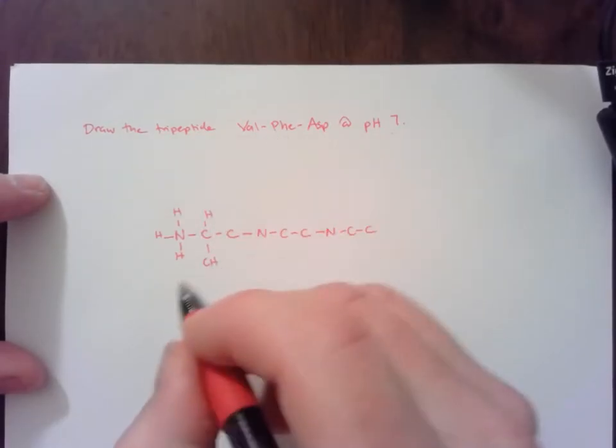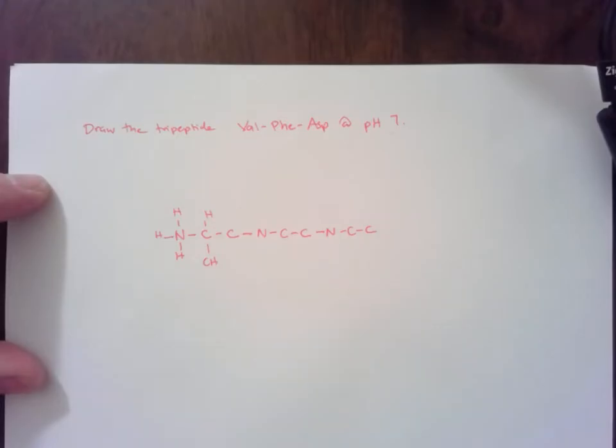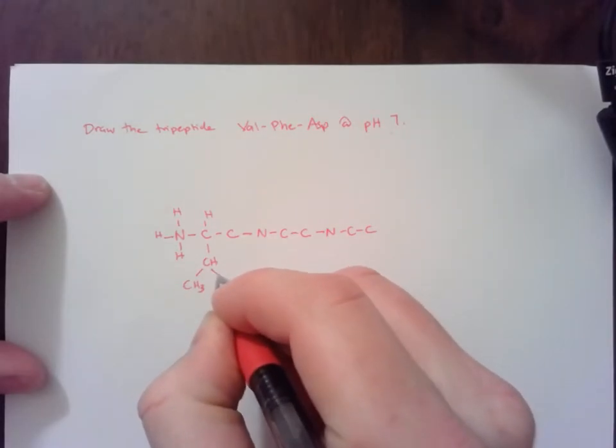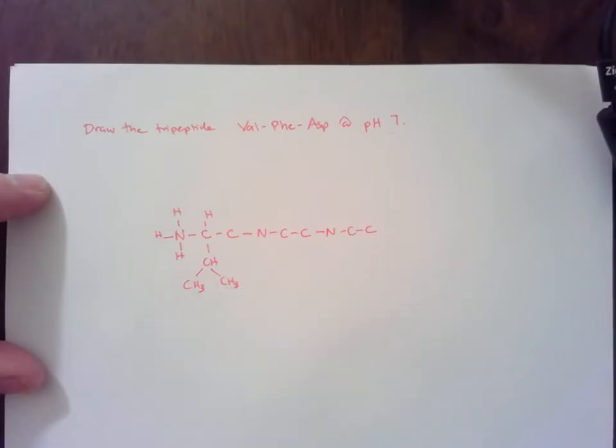For valine, it's CH, CH3, and CH3. Kind of like a V.